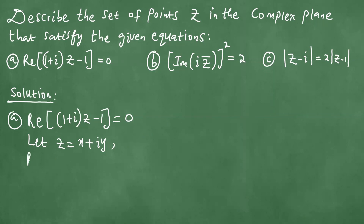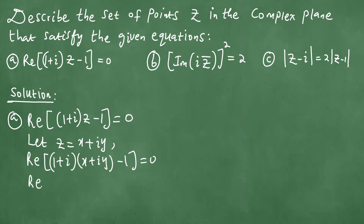When that happens, it means the real part of (1+i)(x+iy) minus 1 equals 0. If you multiply everything out: 1 times x is x, 1 times iy is iy, i times x is ix, and i times iy is minus y. So we get the real part of (x minus y minus 1) plus i(x plus y) equals 0.